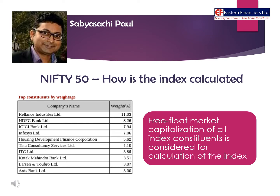The following categories are excluded from the free float factor: shareholding of promoters or promoter group, government holding equity in the capacity of a strategic investor, shares held by promoters through ADRs or GDRs, strategic stake by corporate bodies, investments under the FDI category, equity held by associates or group companies through cross holdings, employee welfare trusts, and stocks under the lock-in category.